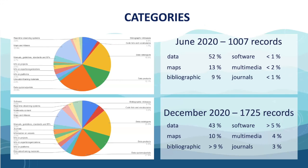The last finding concerns categories. Christian found that for the moment we have a lot of data sources, which is logical, but we are missing categories like software. That should improve in the future. Thank you very much.